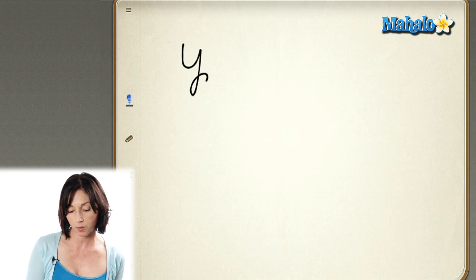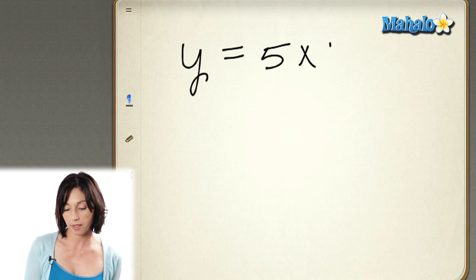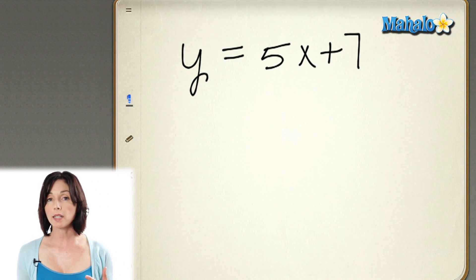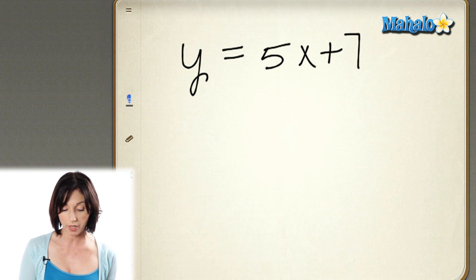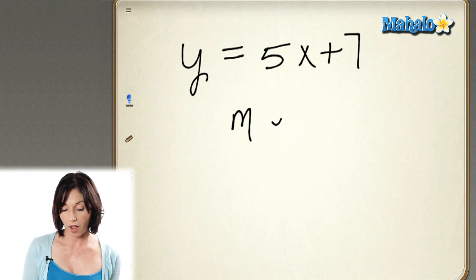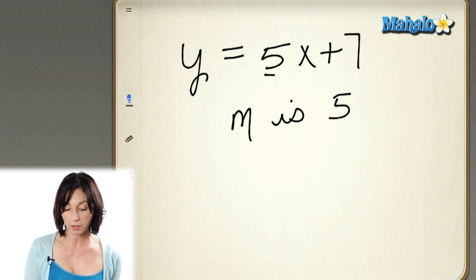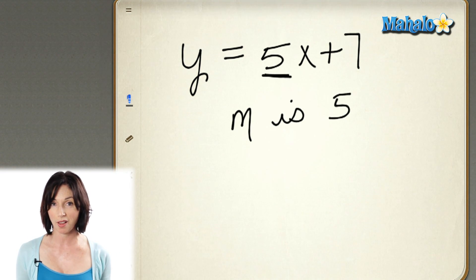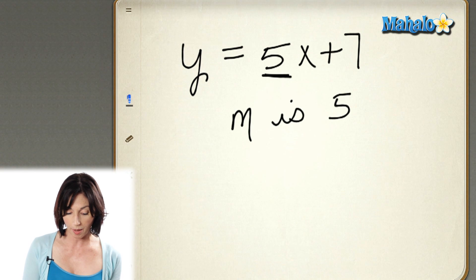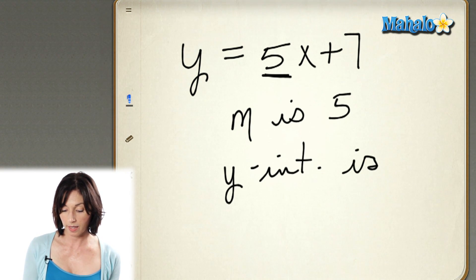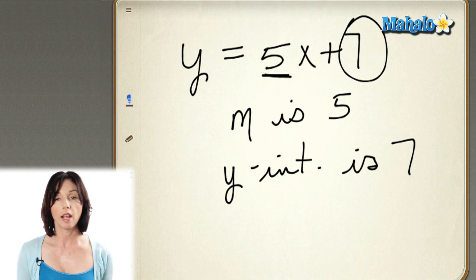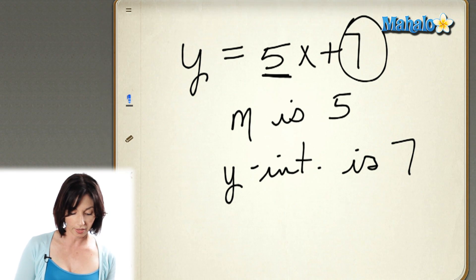You can actually tell a lot by just looking at the equation of a line. Let's say we have a line that's y equals 5x plus 7. Because I know slope-intercept form, I can just look at the equation and tell that the slope of this line is 5, because 5 is what's multiplying my independent variable x. And the y-intercept is 7 — that's the b value in mx plus b.